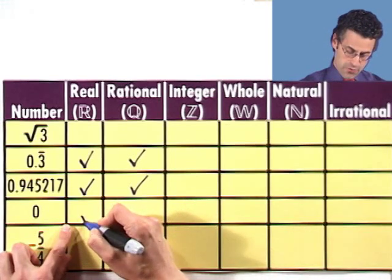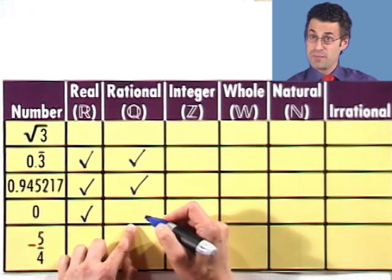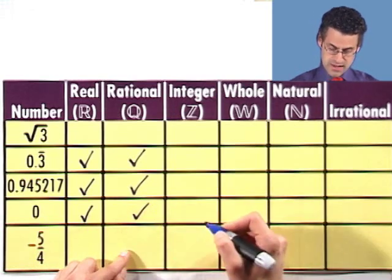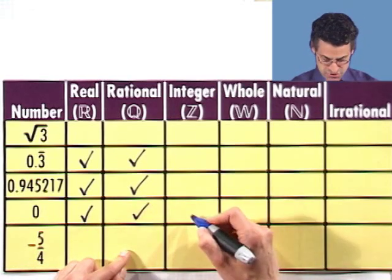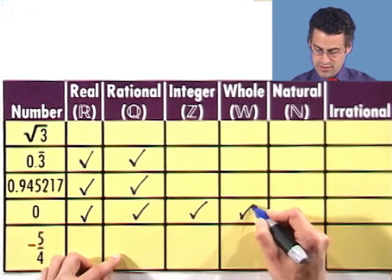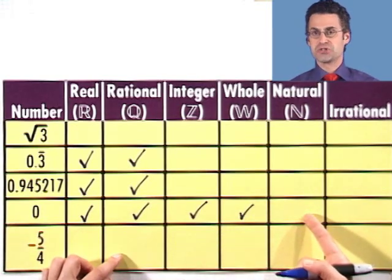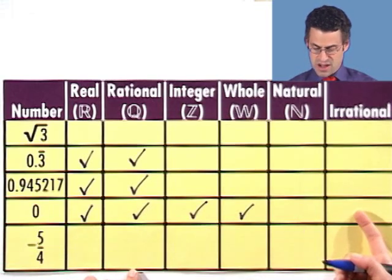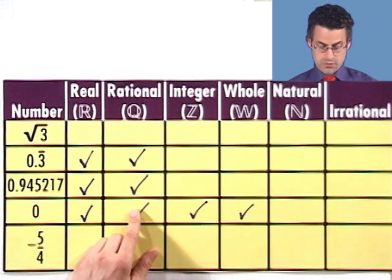0 is a real number. It's a rational number because I can write it as 0 divided by 1. And is it an integer? It sure is. Is it a whole number? Yeah, it's the first whole number. But it doesn't make the cut to be a natural number because the natural numbers start at 1. So no dice there. And it's not irrational since we already know it's rational.